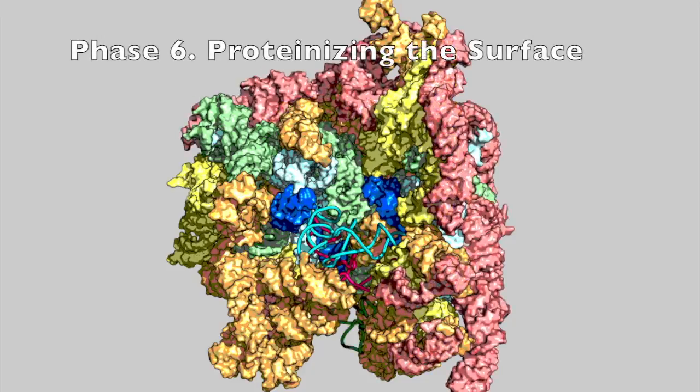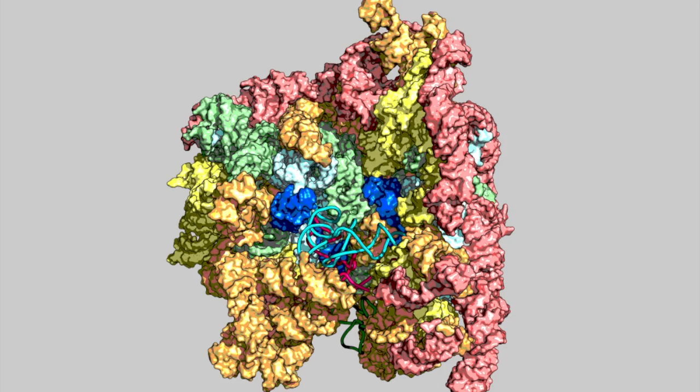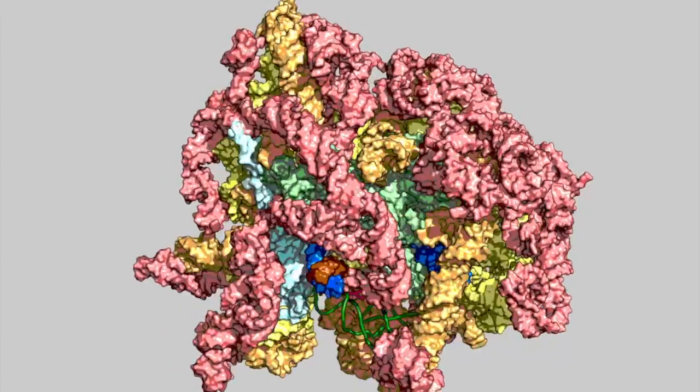In phase 6, the prokaryotic ribosome is finalized, with a fully optimized genetic code. The ribosomal surface is an integrated patchwork of RNA and mature ribosomal proteins.